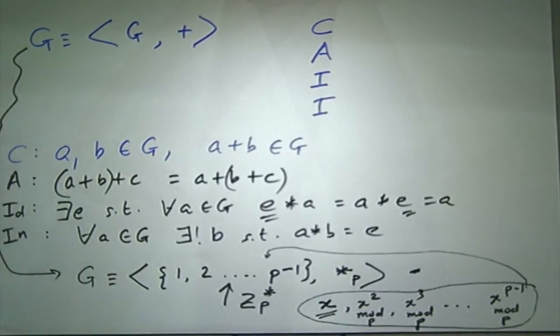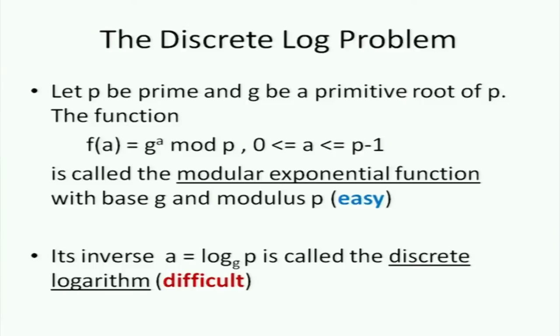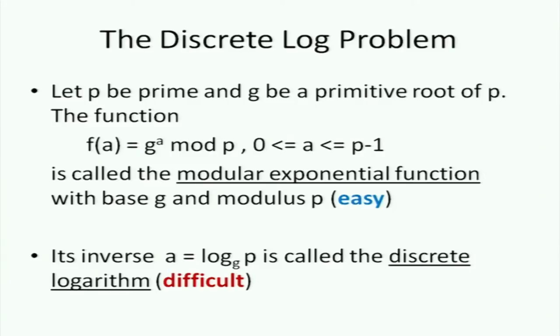With this background, let's look at both problems. Once again, let P be a prime and G a generator of Z_P*. The operation f(a) = G^a mod P for a between 0 and P-1 is called modular exponentiation. The interesting thing is the reverse operation — just like normal exponentiation has a logarithm as its inverse, here the inverse is called the discrete log: a = log base G of (G^a mod P), and it's modulo P.